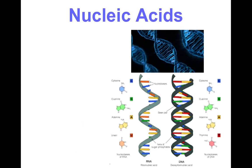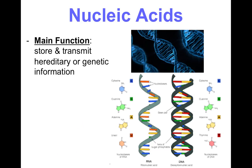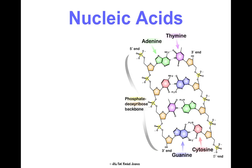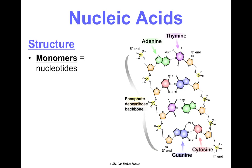Last but not least are nucleic acids. The purpose of a nucleic acid is to store and transmit your hereditary or genetic information. The two types are DNA and RNA. You get these from your parents, not from your food — when you eat a hamburger, you're getting protein from it, not the cow's DNA. This is the one macromolecule we separate from the others in terms of getting it from food. The monomer is called a nucleotide, and there are five: A, G, T, C, and U — we'll learn their full names later.